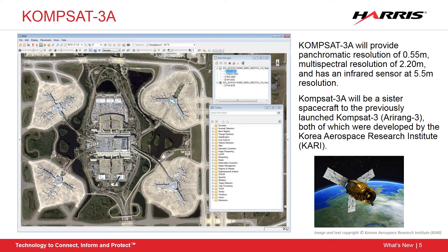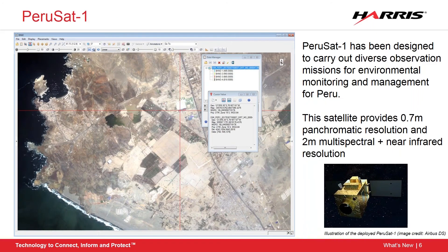In addition to CompSat 3A, ENVI is also going to support PeruSat 1. PeruSat is another sensor that provides multispectral imagery, with a focus on monitoring Peru's environment. The sensor boasts two-meter multispectral imagery with a panchromatic band at 0.7 meters. Here you can see a sample image and what the satellite looks like.